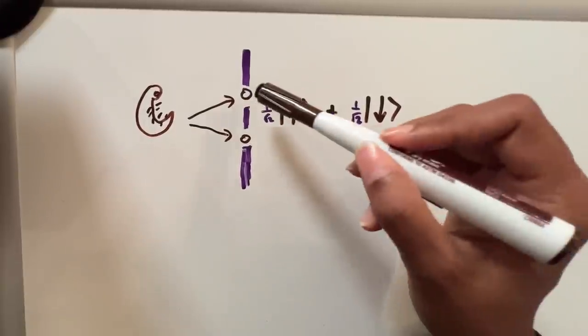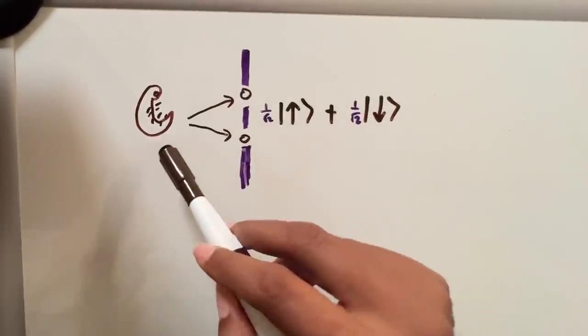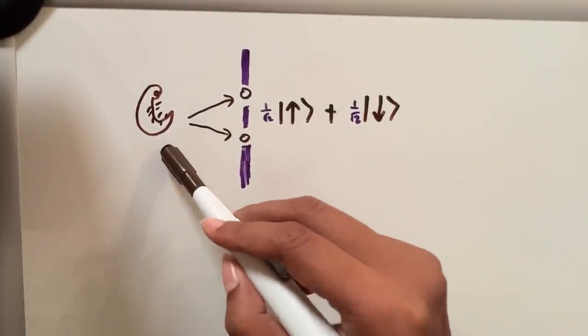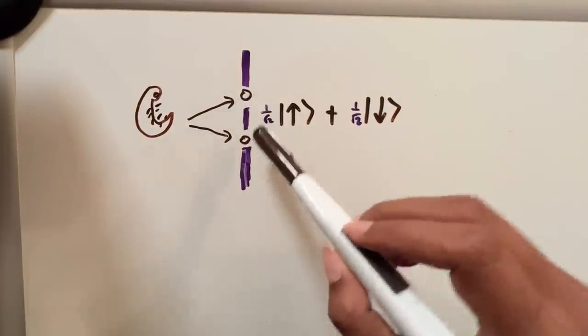If the tardigrade is going through both of these things, like what's happening to it? I mean it can't be splitting into two. It's an object that's alive. If you split it into two, then it's not going to be a living creature at the end of this experiment. So does that mean that there's two copies of it?